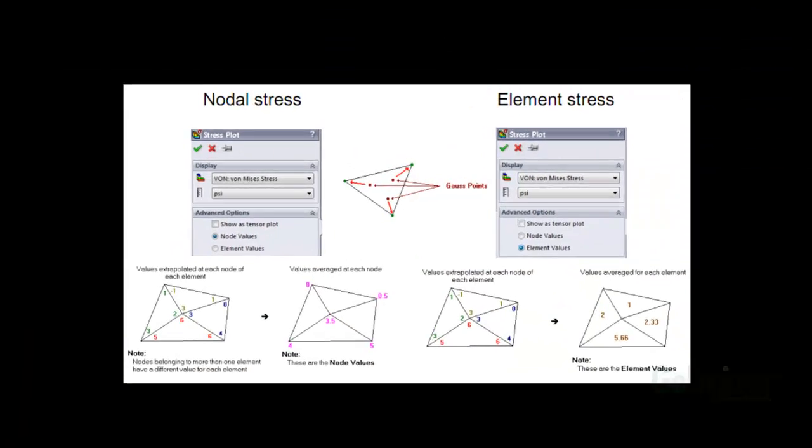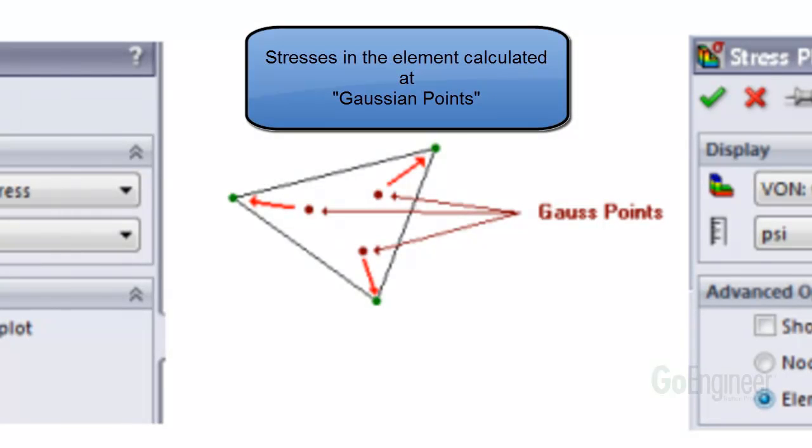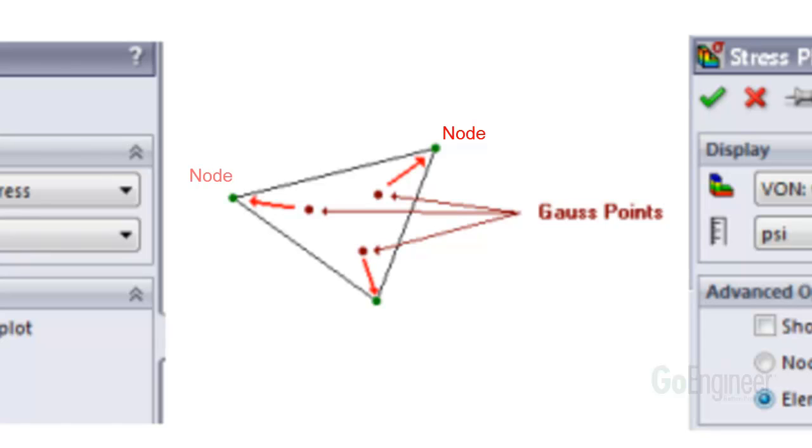This image shows how the calculations are performed. Here is where stresses are actually calculated inside a representative element. The locations are called Gaussian points, which have been determined to be the ideal locations from which to calculate stress in an element. Once that is done, the software extrapolates the stress values from the Gaussian points out to the nodes of the element.